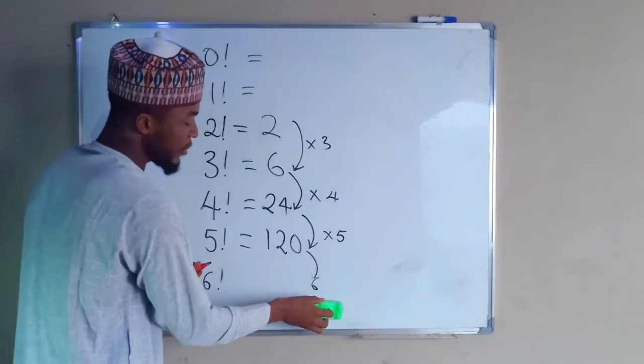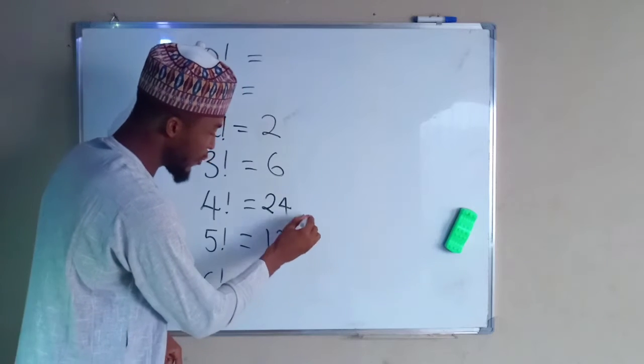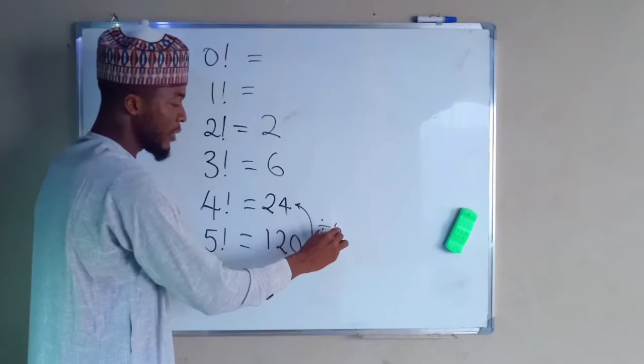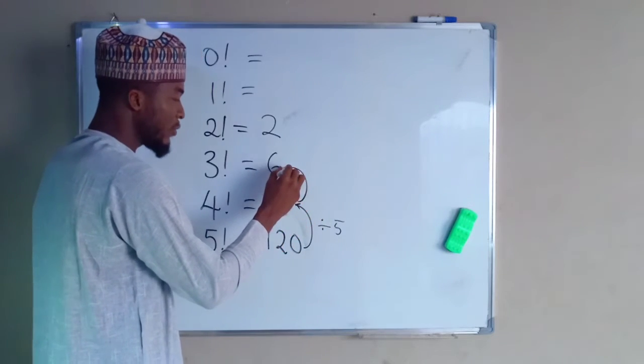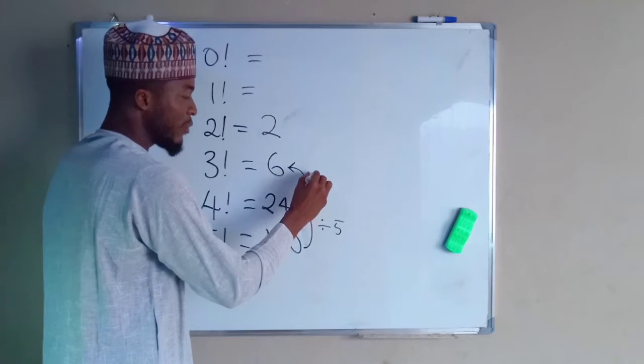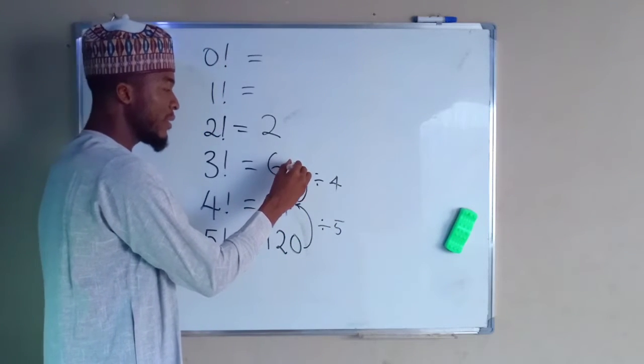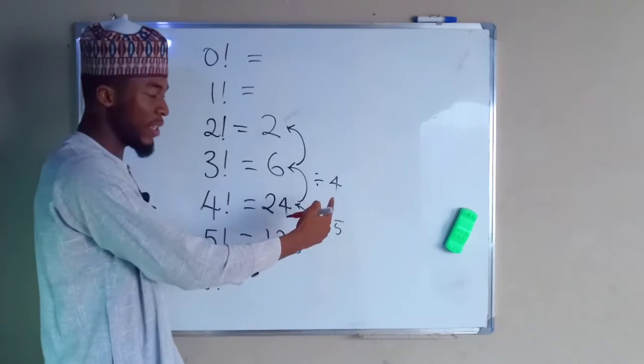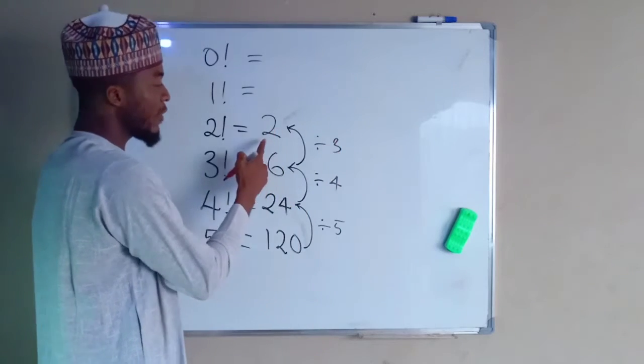If we should come from the last number, we know from 120, if you come back to 24, you have to divide by 5. From 24 down to 6, you have to divide by 4 because 24 divided by 4 is 6. If you divide 6 by 3, look at how the chain is going, reducing by 1. If you divide this number by 3, you are going to obtain 2.